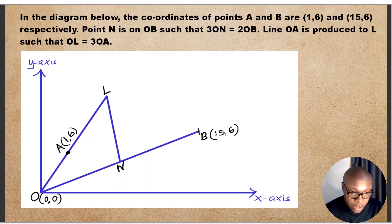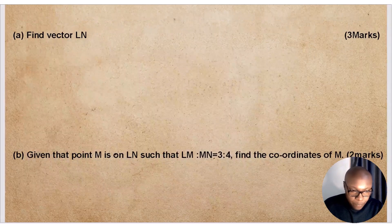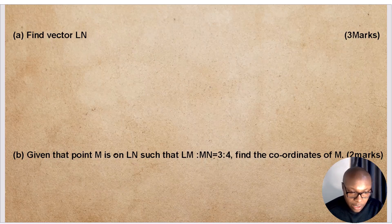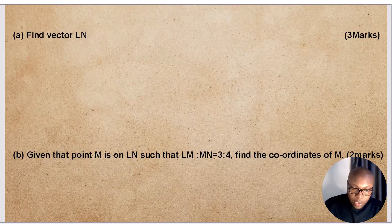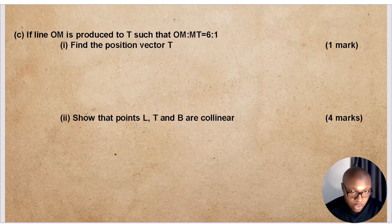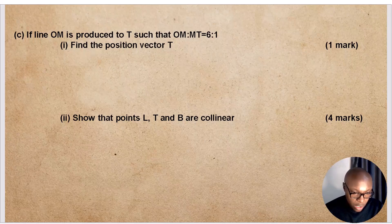Point N is on OB such that 3ON equals 2OB. Line OA is produced to L such that OL equals 3OA. Part A: find the vector LN (three marks). Part B: given that point M is on LN such that LM to MN equals 3 to 4, find the coordinates of M (two marks). Part C: if line OM is produced to T such that OM to MT equals 6 to 1, find the position vector of T (one mark). Then Part 2: show that points L, T, and B are collinear.